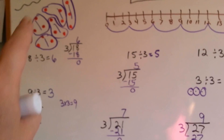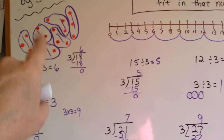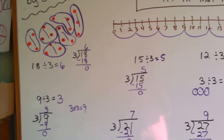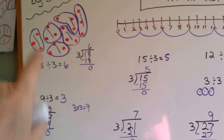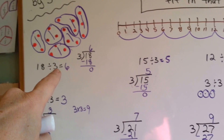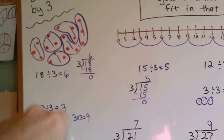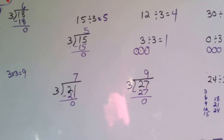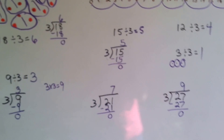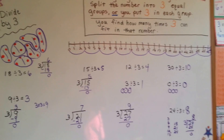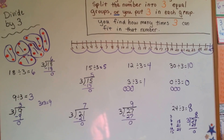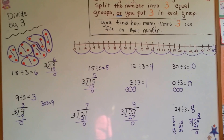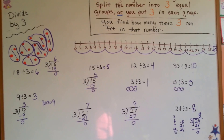So you can either circle the groups to find out how many, or draw dots and circle groups of 3, then count how many groups you've got. Or you can use a number line, or count on your fingers. That is how you divide by 3 — and keep memorizing your times table. They'll help you. Keep up the good work, and I'll see you in the next video.